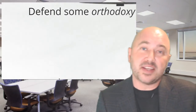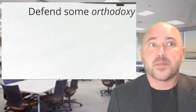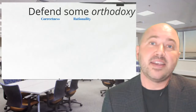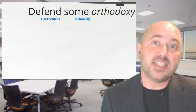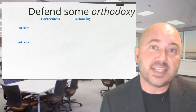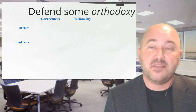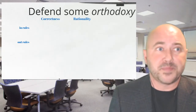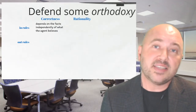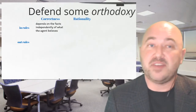What's the orthodoxy I want to defend about the relationship between rationality and correctness? There are two pieces — about each of rationality and correctness. Without relying too seriously on an analogy to natural deductive systems, we can think of them as in-rules and out-rules. The in-rules tell us the conditions under which things are rational or correct, and the out-rules tell us the consequences for how we should treat somebody whose actions are rational or correct. The in-rules for correctness tell us that correctness of action depends on facts independently of what the agent is aware of about those facts.